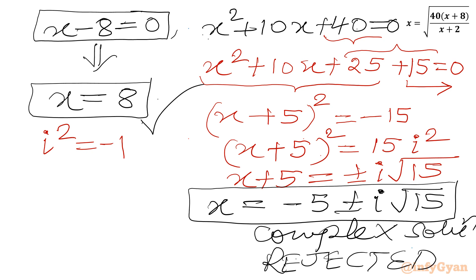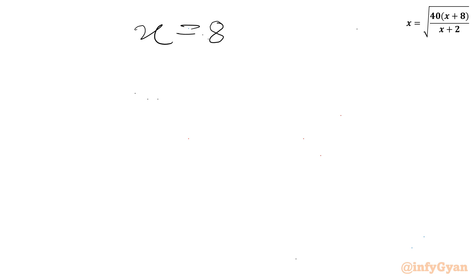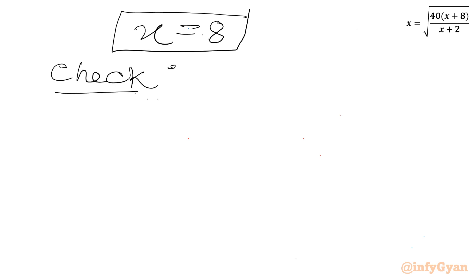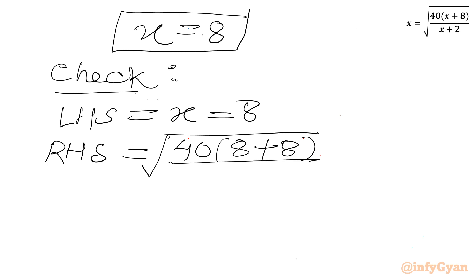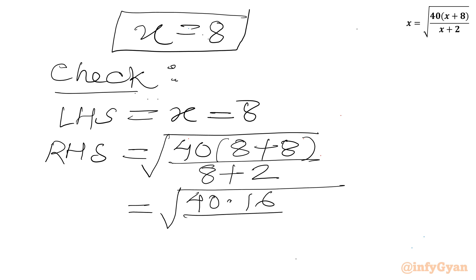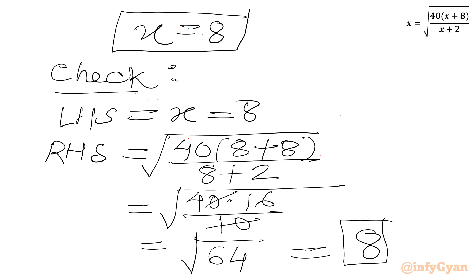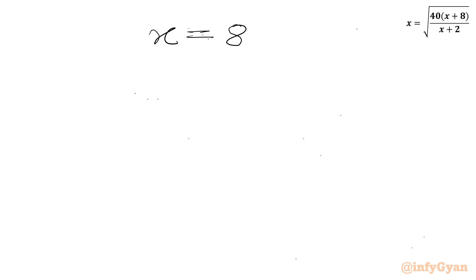So our only real solution is x equals 8. Now we verify: LHS is 8. RHS is the square root of 40 times (8 plus 8) over (8 plus 2) = √(40 × 16/10) = √64 = 8. LHS equals RHS, so x equals 8 is confirmed as the true and only real solution.